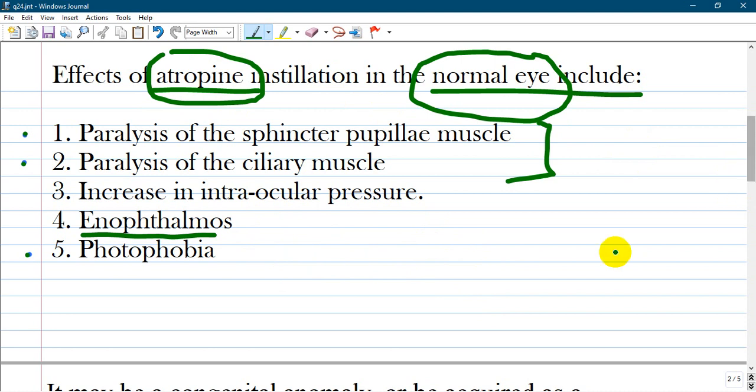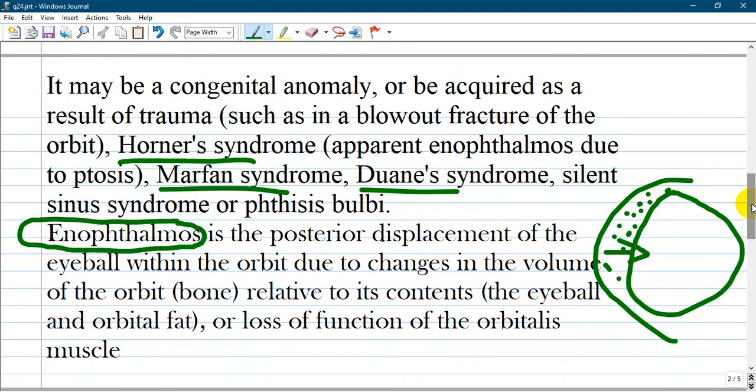And enophthalmos is a special condition found in patients with congenital anomaly or acquired. What does enophthalmos mean? It is a posterior displacement of the eyeball back.